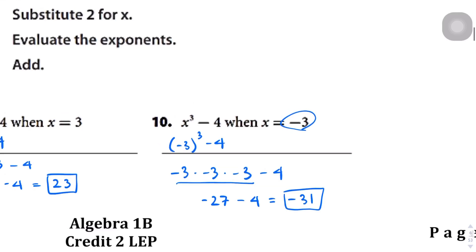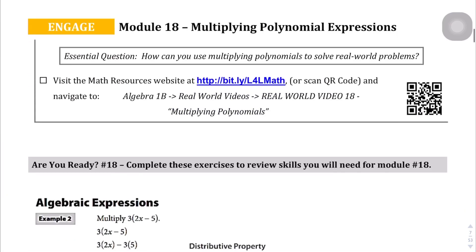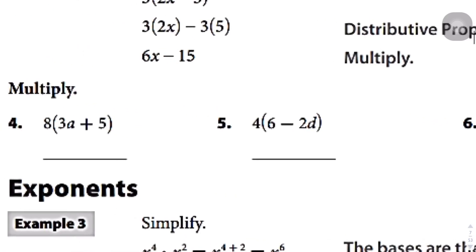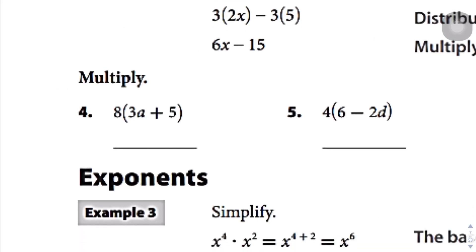Moving on to page 7, we're now multiplying algebraic expressions to simplify them. In question number 4, we're going to distribute. This 8 is going to be distributed to the first term and to the second term. So 8 times 3a gives 24a, since 8 and 3 multiply and the variable a stays the same. Then plus 8 times 4 is 40. And we stop there because you can't combine anything further within that expression.